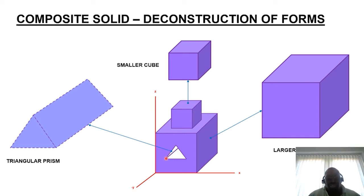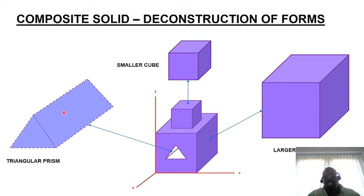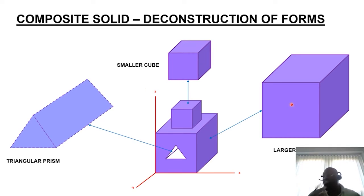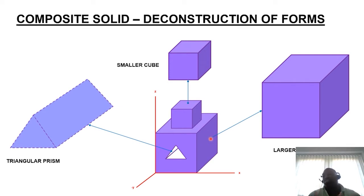We also have a triangular hole — a triangular prism cutout. Since you are removing material, the volume is assumed to be negative. Any material that is an addition to the form is positive. Be very careful: if you have holes or cutouts within a solid form, assume the volume to be negative.